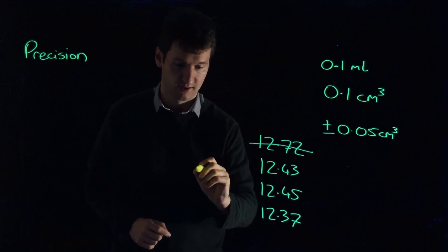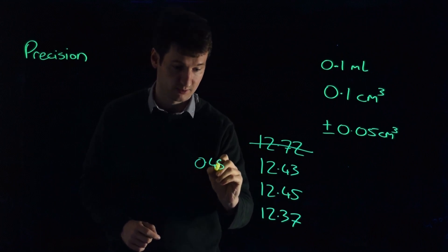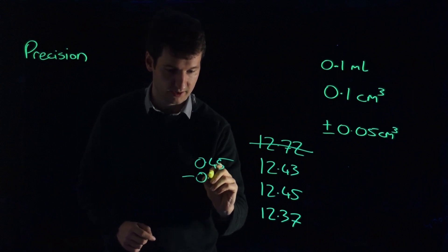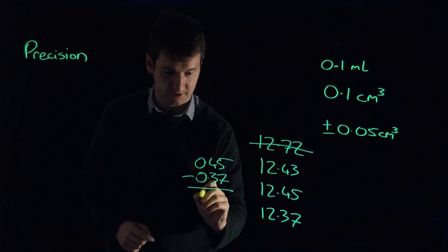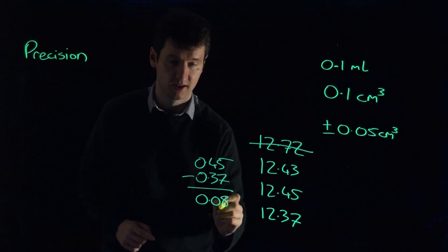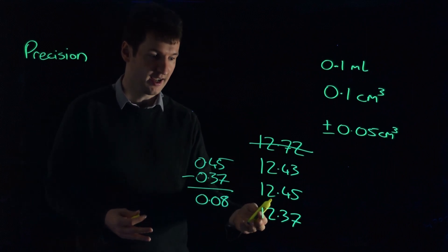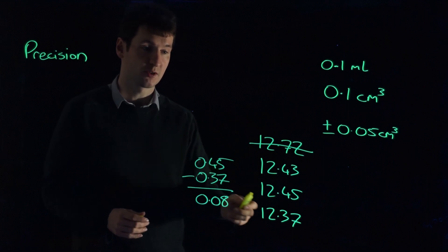So let's take 0.45. We can ignore the 12, so I'll cancel out. Minus 0.37. We'll see that the difference is 0.08. So in this case, yes, we are sufficiently happy with our precision that we can use those results.